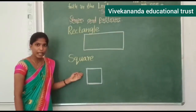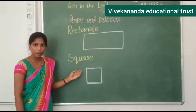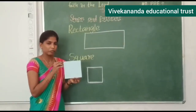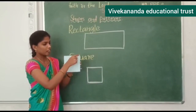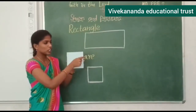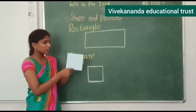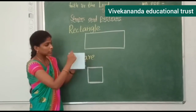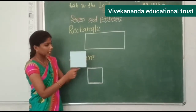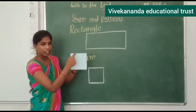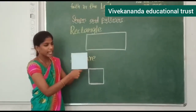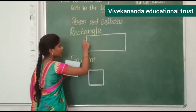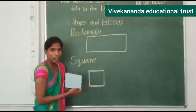Next, what shape is this? Square. So this is the square. Square also has four corners and four sides. For square, all sides are of the same length. For rectangle, two sides are long and two sides are short.